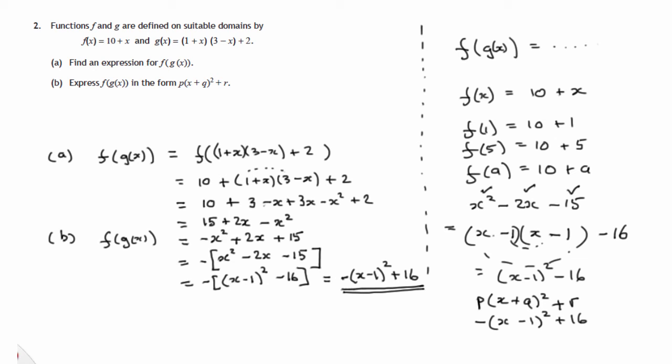Now the last part of the question, we're told there's another function h of x, which is 1 over the function that we've just worked out. So it's 1 over this expression. Now I'm going to write this as 16 minus x minus 1 all squared, so long as the 16 is still positive and the x minus 1 all squared is negative.